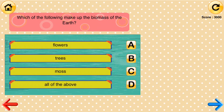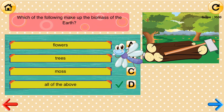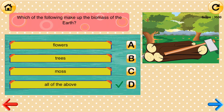Which of the following make up the biomass of the earth? Flowers, trees, moss, all of the above. All of the above.